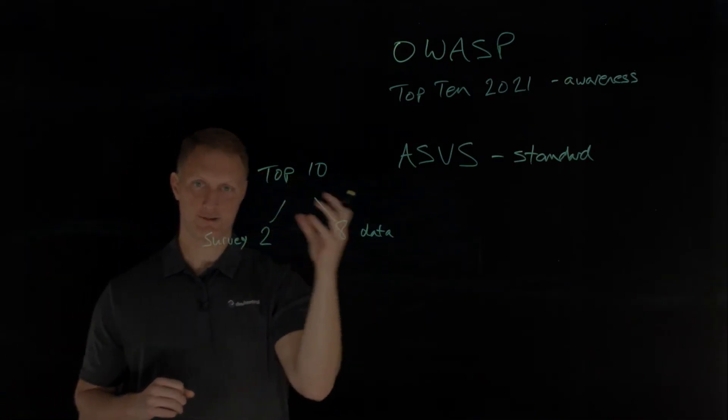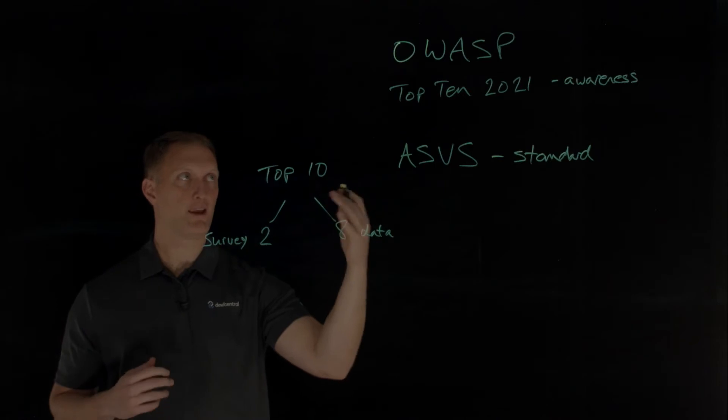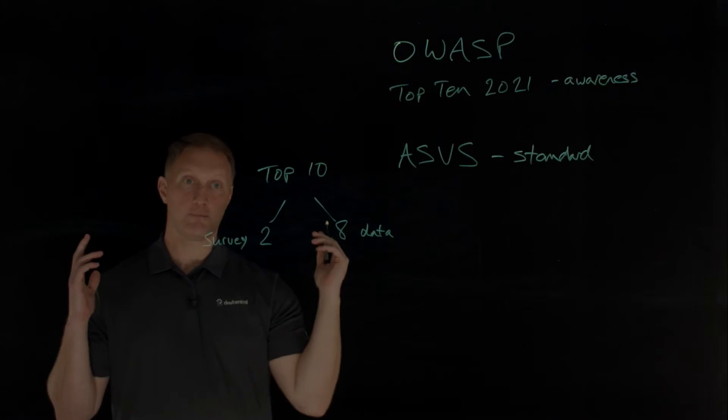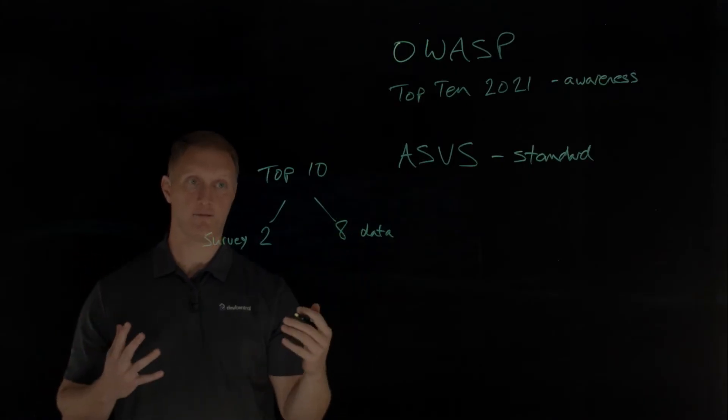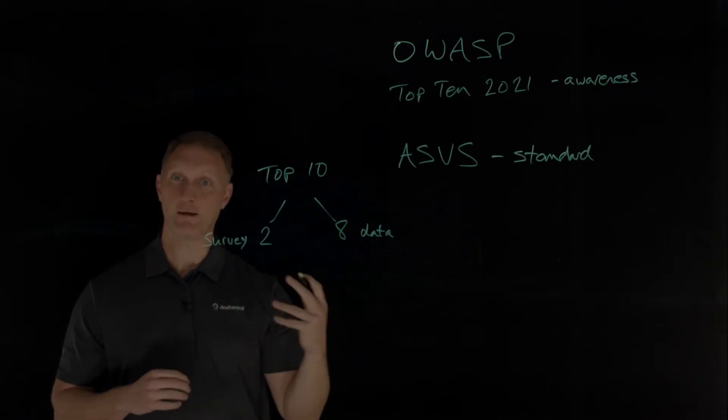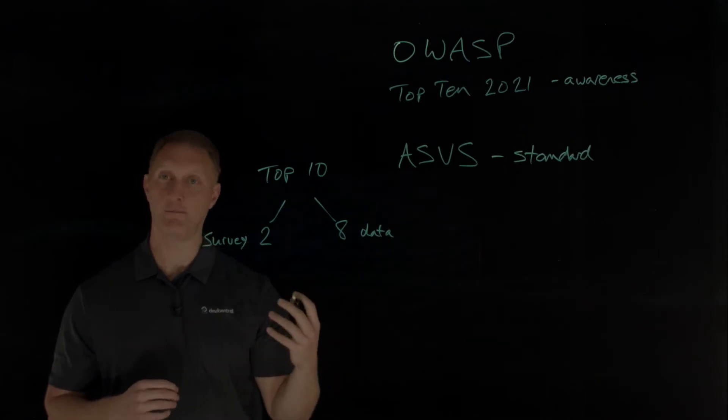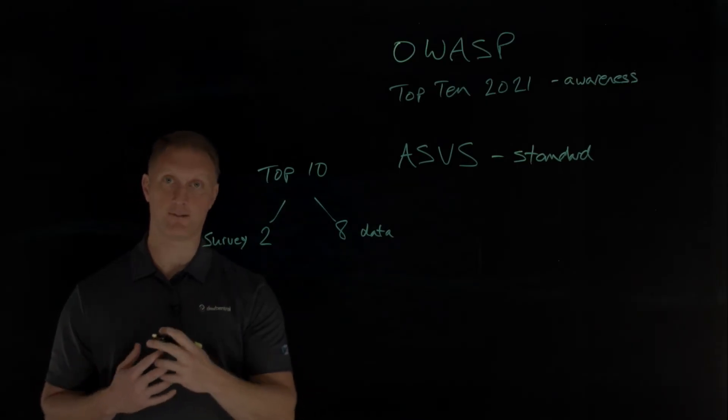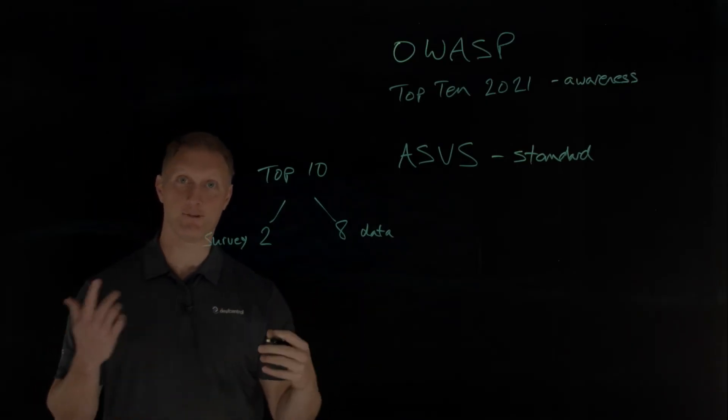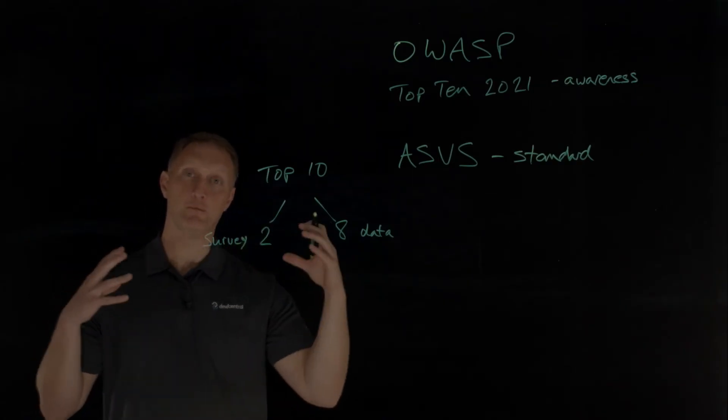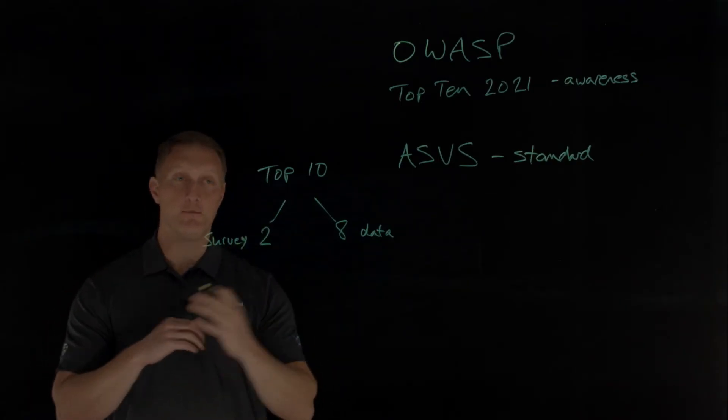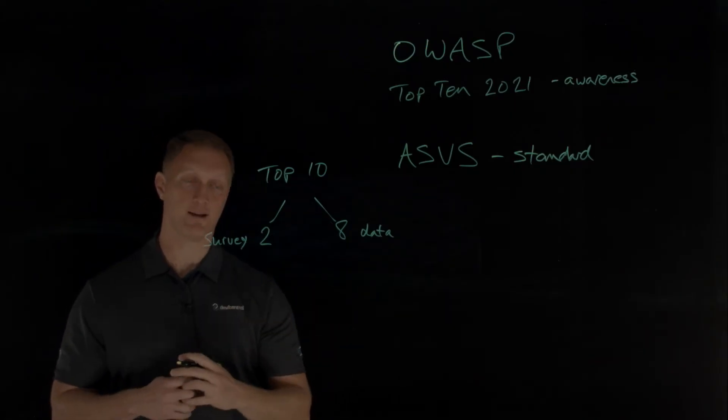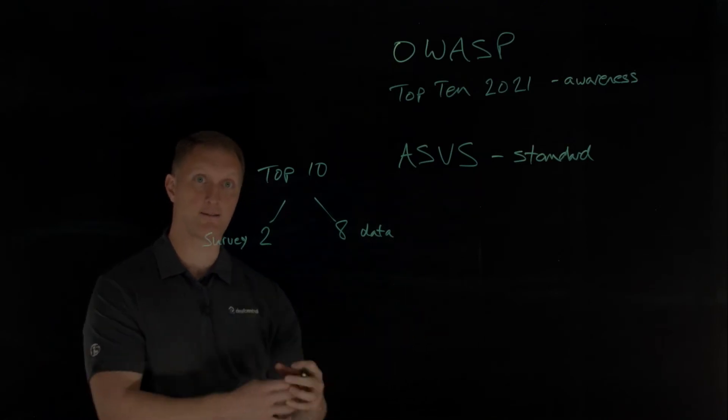Previous data collection efforts that the OWASP was engaged in, like in 2017 and previous versions, they would send out a prescribed set of approximately 30 CWEs. The CWE is a Common Weakness Enumeration, managed by the MITRE organization, the same organization that manages the CVE, the Common Vulnerabilities and Exposures. The Common Weakness Enumeration is a community-developed list of software and hardware weakness types.